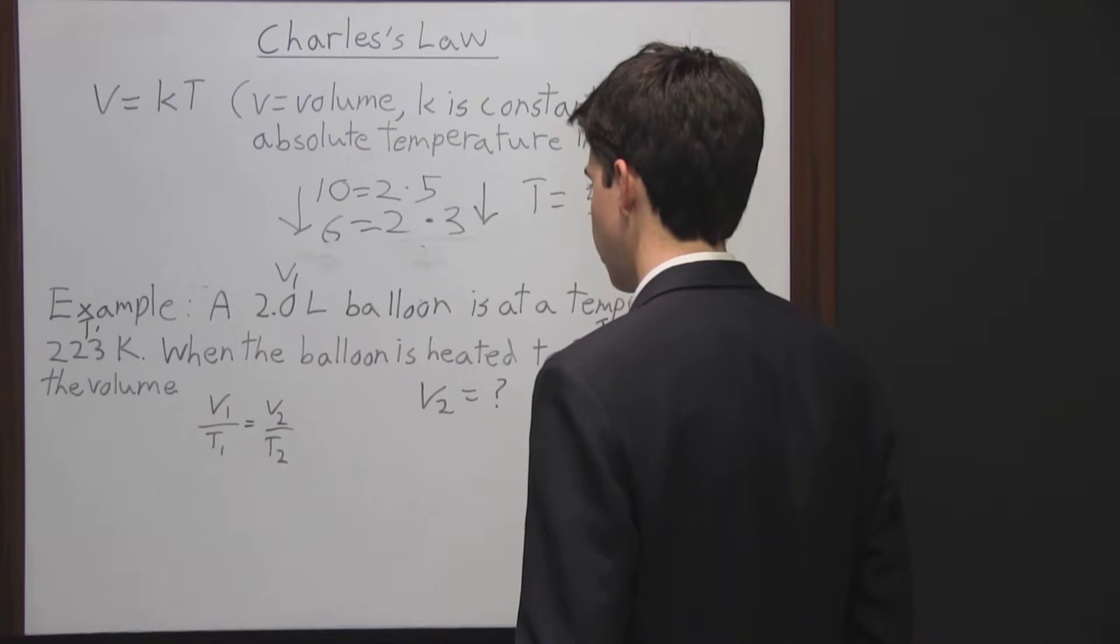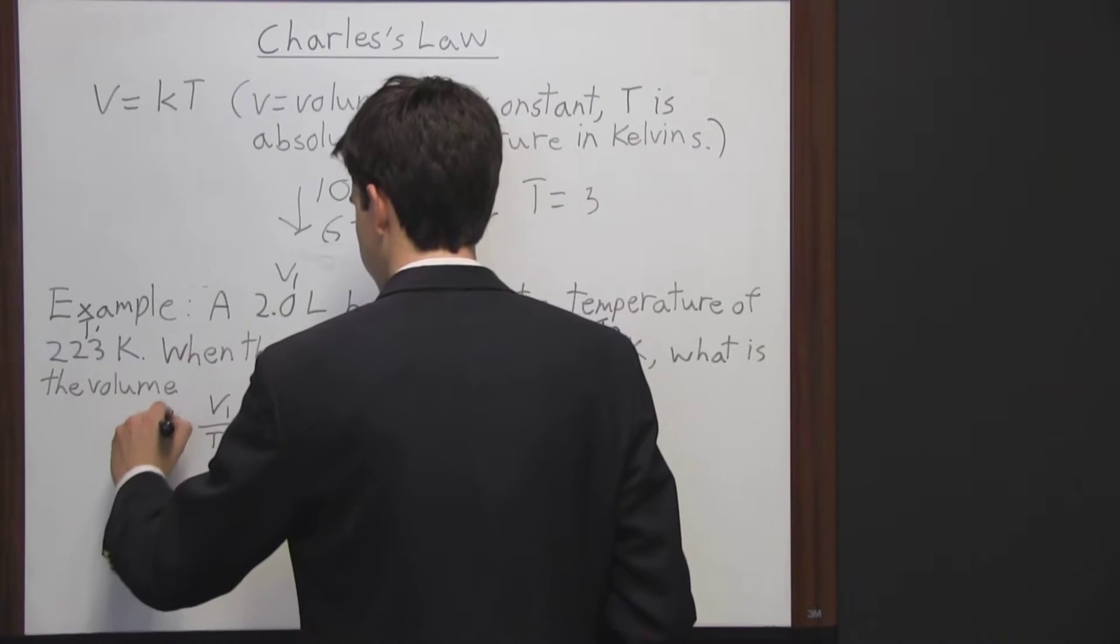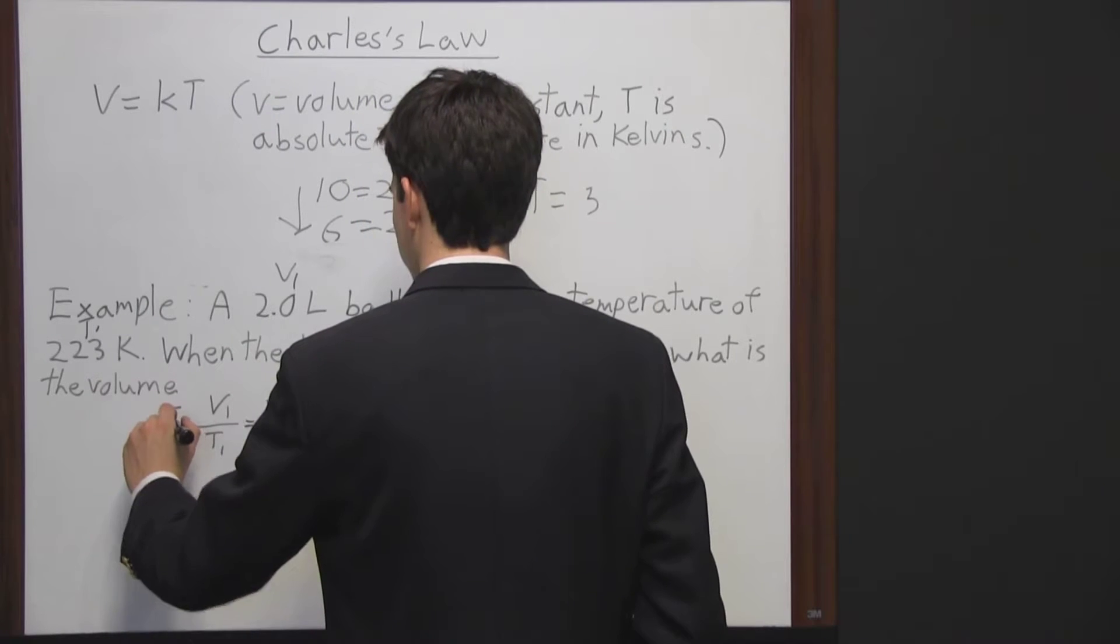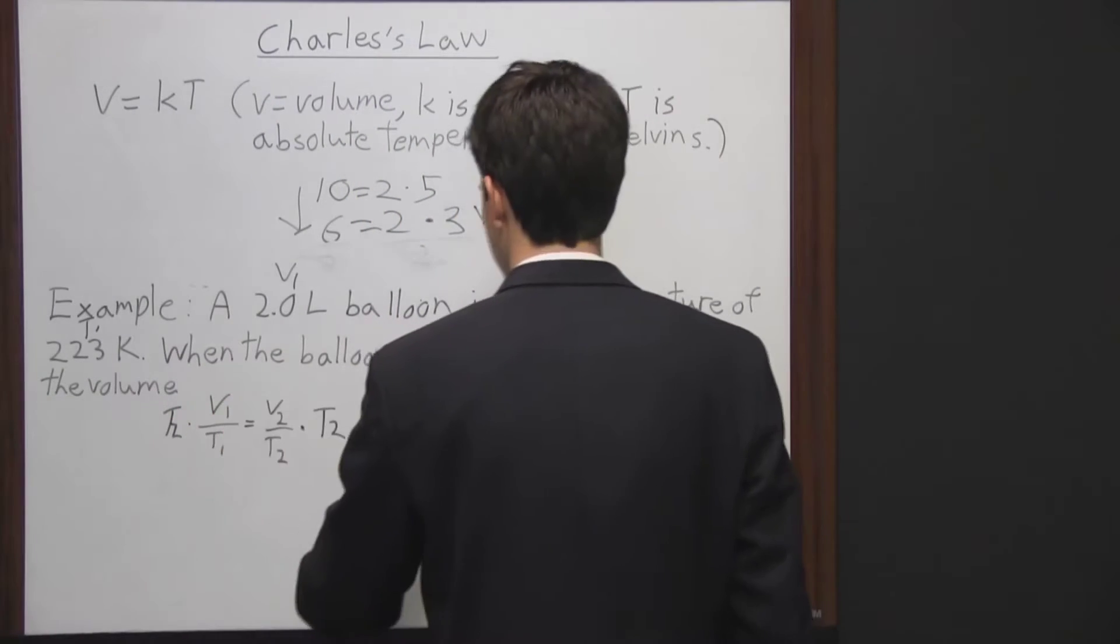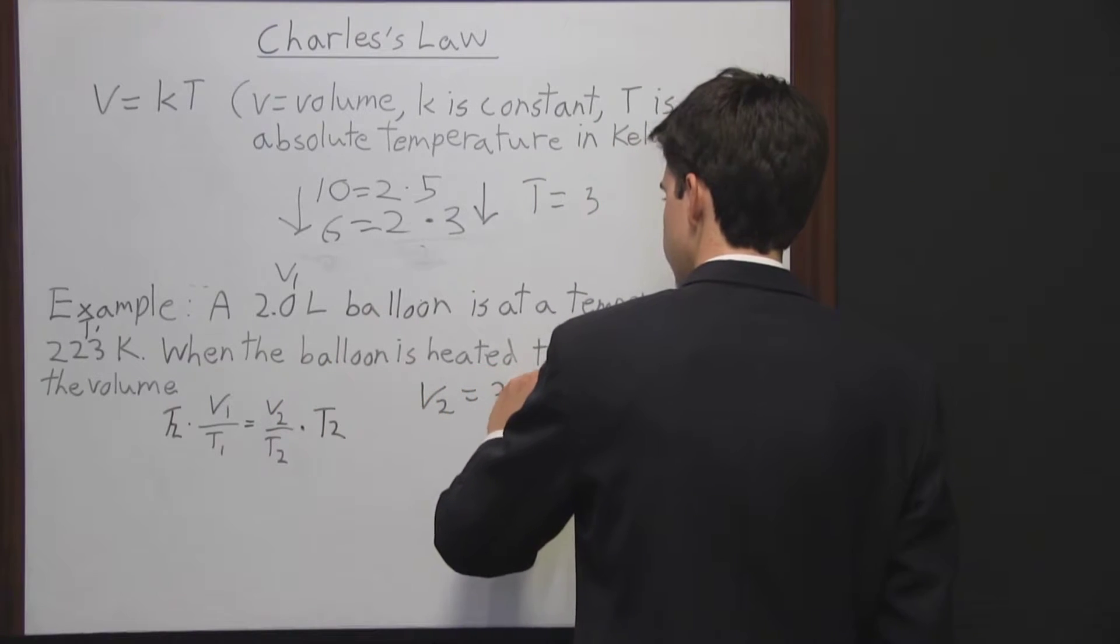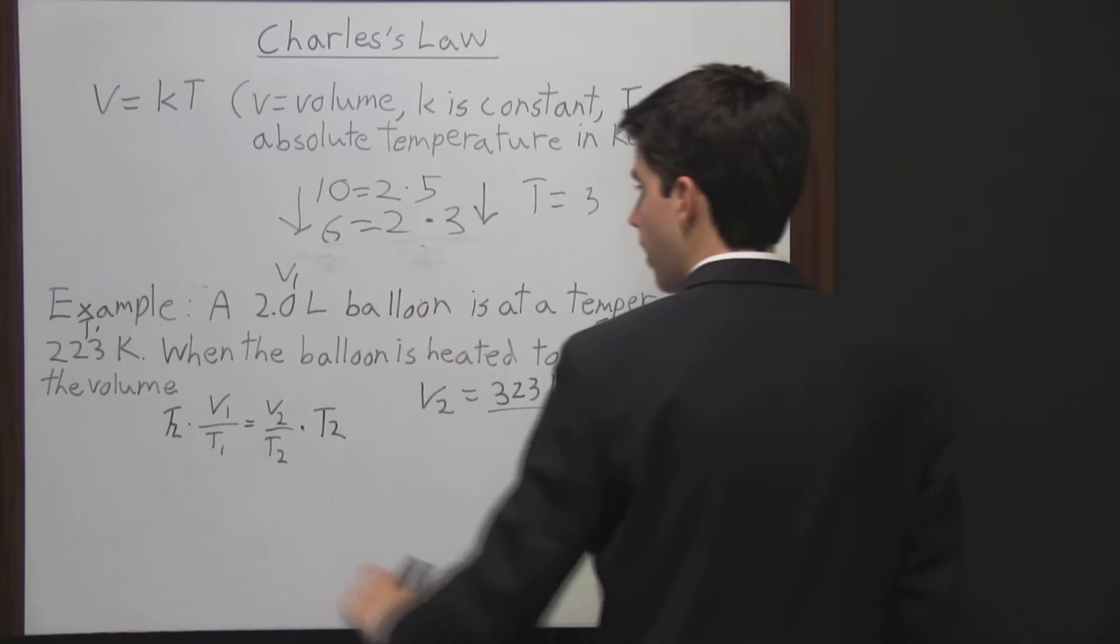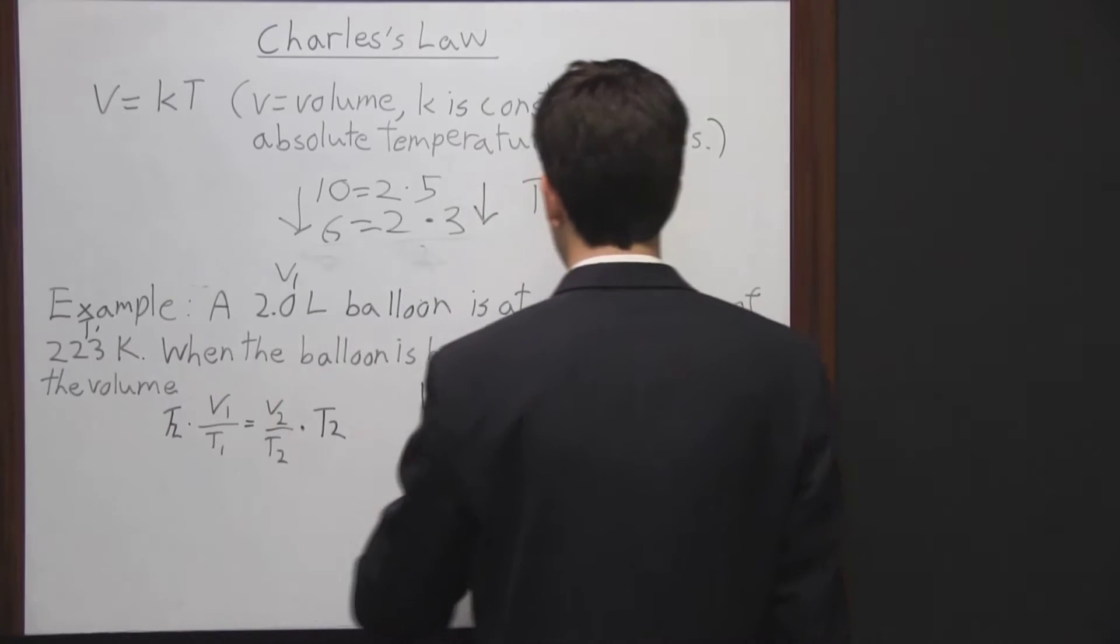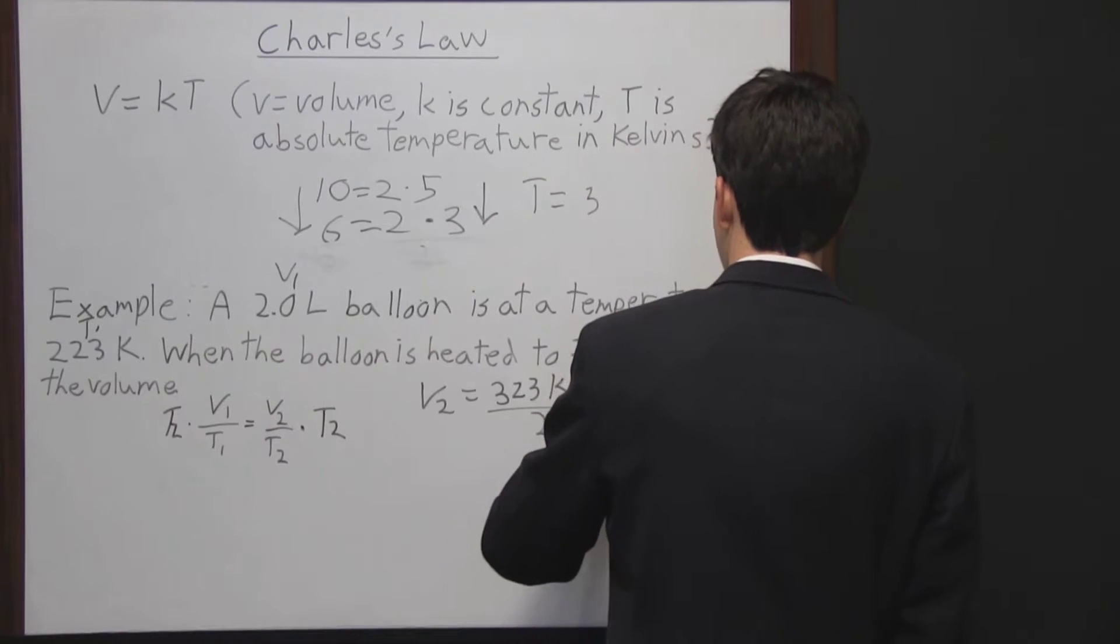We're going to multiply both sides by T2 to get V2 by itself on the side of the equation. So V2 equals T2, which is 323 K, times V1, which is 2.0 liters, then divided by T1, which is 223 K.